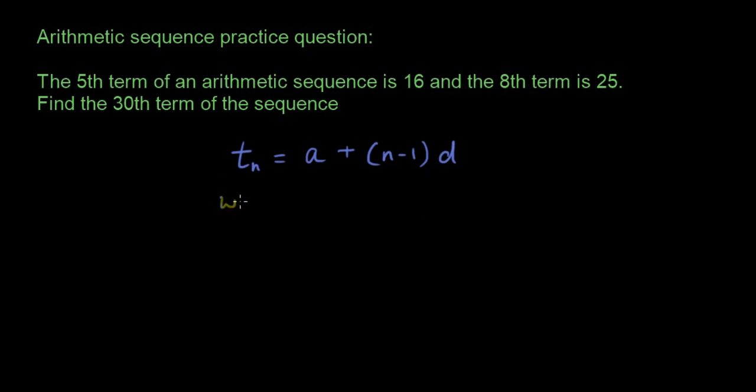So we know that when n is 5, tn is equal to 16. The fifth term is 16. So let's put that into our equation, so then we have 16 equals a plus 4d. And then the next thing we have is when n is equal to 8, tn is equal to 25. So let's put that in, so we have 25 equals a plus 7d. Right, because n minus 1 is 8 minus 1, which is 7.